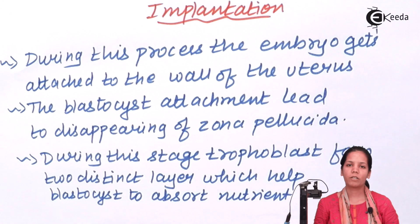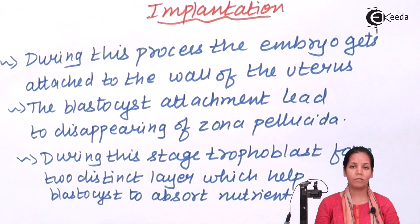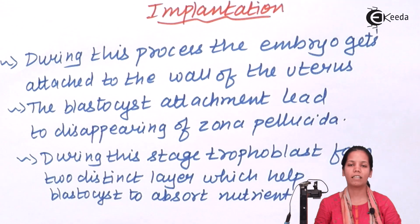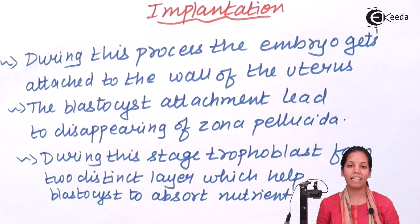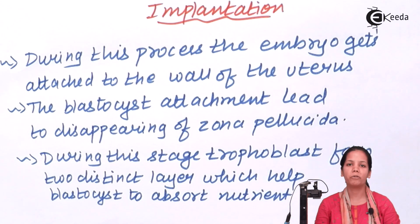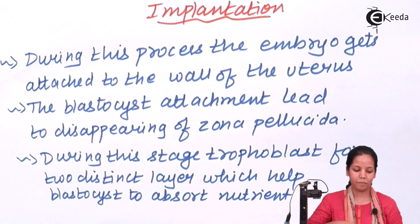Implantation is a process that happens after the morula stage and the blastocyst stage has been completed. All the germ layers have been formed and finally it is the time when the fetus will attach to the wall of the uterus. That's implantation.